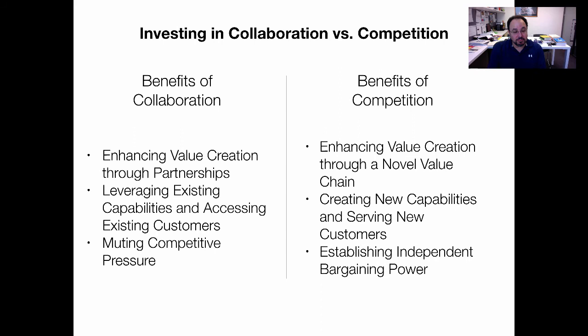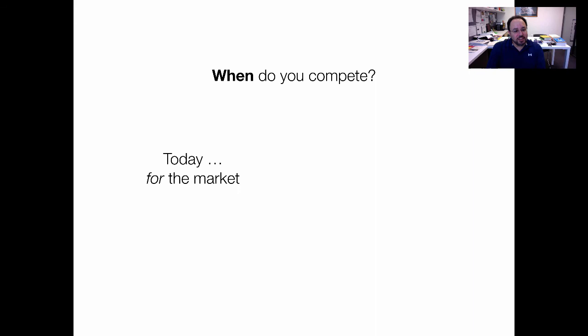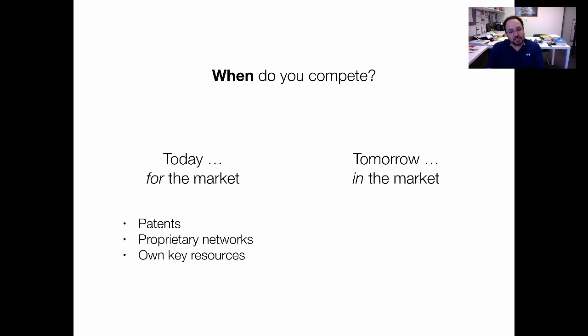So we have this choice of who do you compete with. I sometimes phrase execution and control as: when do you compete? Do you compete today for the market or tomorrow in the market? Control is competing now to capture the market in the future through patents, proprietary networks, and owning key resources. Execution means you're going to still be competing tomorrow — no IP, generally open platforms, developing capabilities.